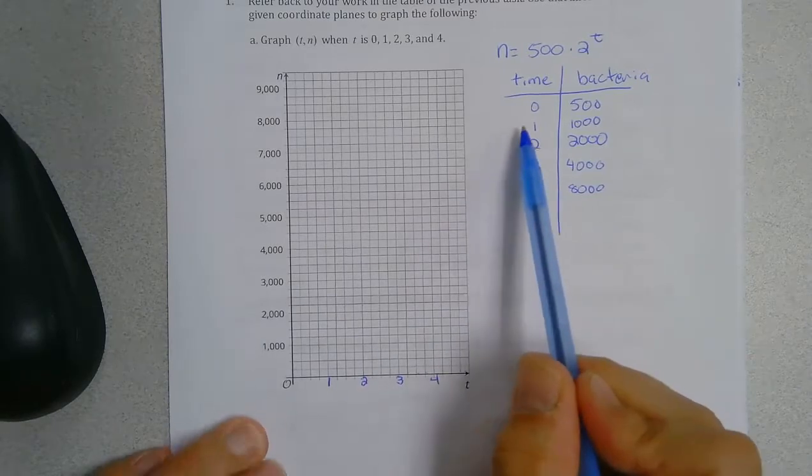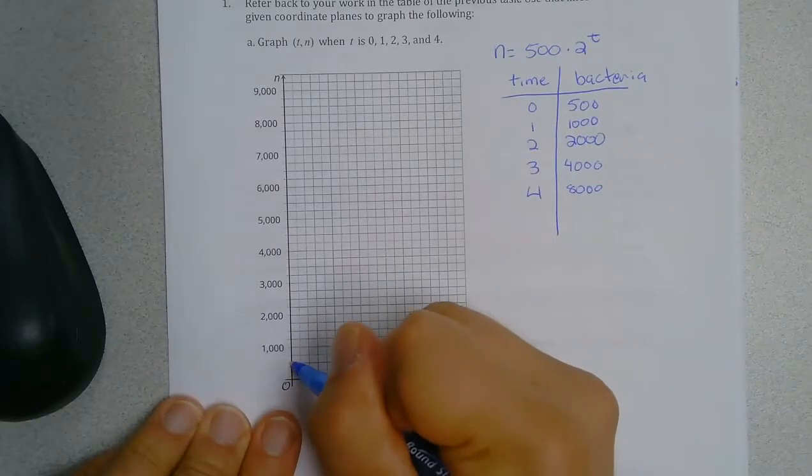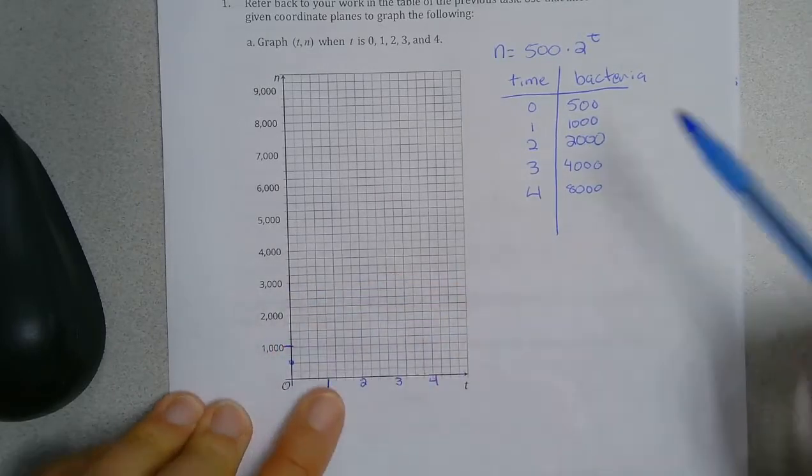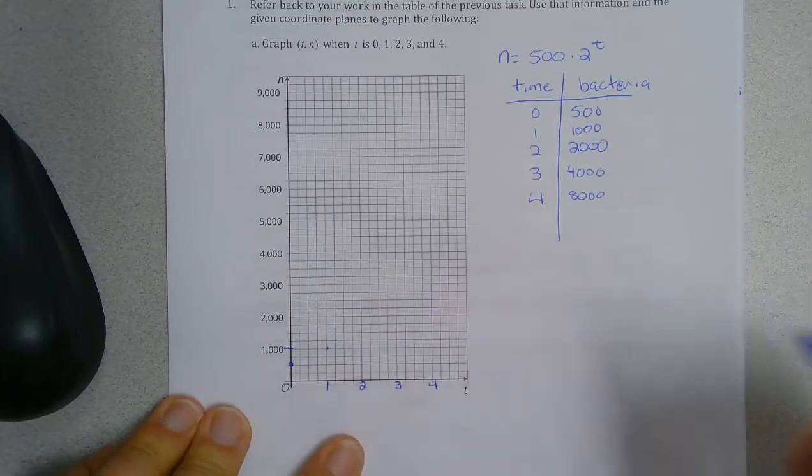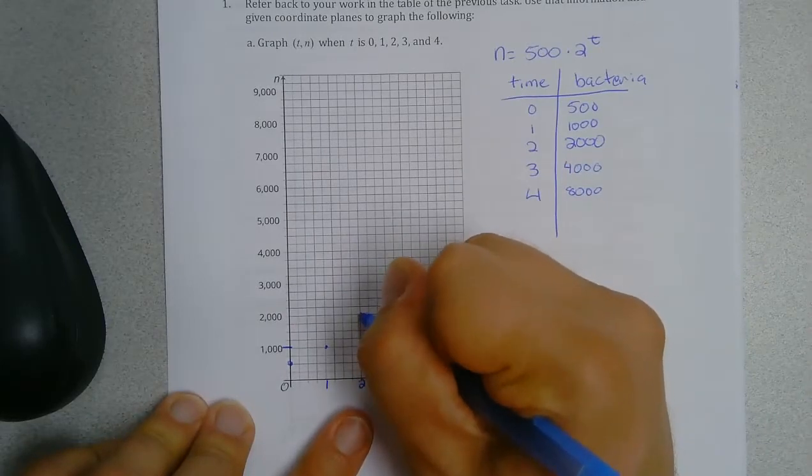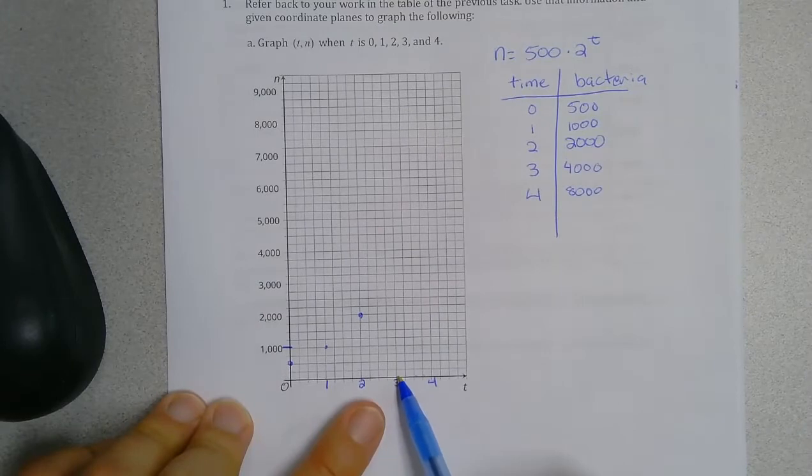So in graphing that, at time 0, we're at 500. Again, this mark is 1,000. Time 1, we're at 1,000. Time 2, we go up to 2,000. Time 3, so over to time 3.